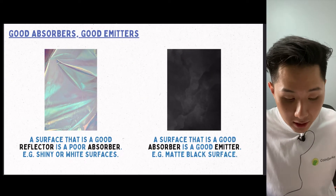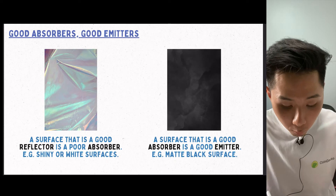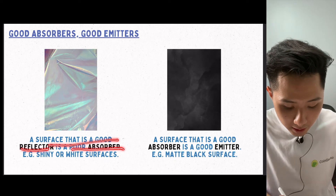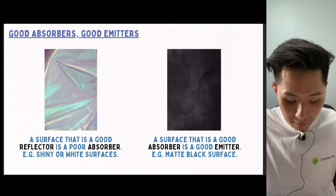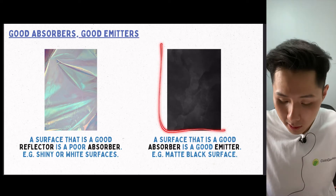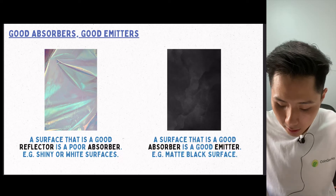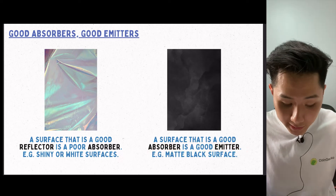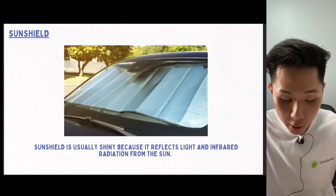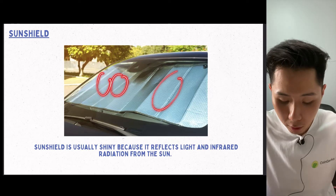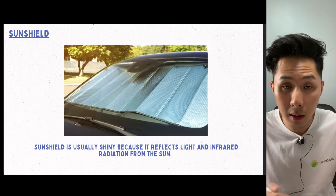For radiation, a shiny or white-colored surface is called a good reflector and poor absorber — meaning if you radiate heat energy on them, they will reflect it but not absorb it. Whereas a black-colored surface is a good absorber and also a good emitter, meaning it can emit heat very easily. An application of this is sun shoes — they are usually in bright colors because we want to reflect all the light and infrared radiation coming from the sun.